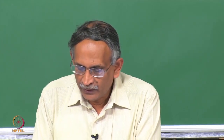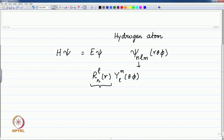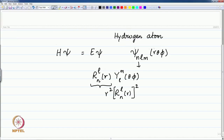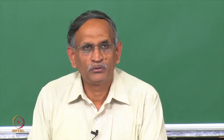The radial function R_nl(r) and the radial distribution we will consider in this lecture — namely r² times R_nl(r) squared — represent the wave function component and the probability distribution for the radial part.